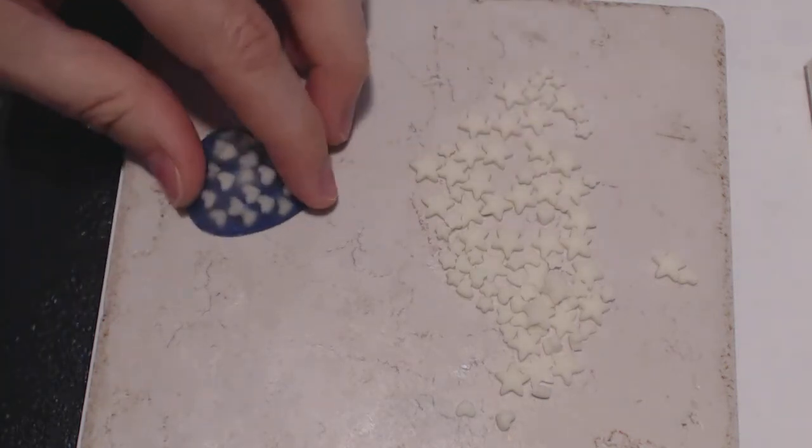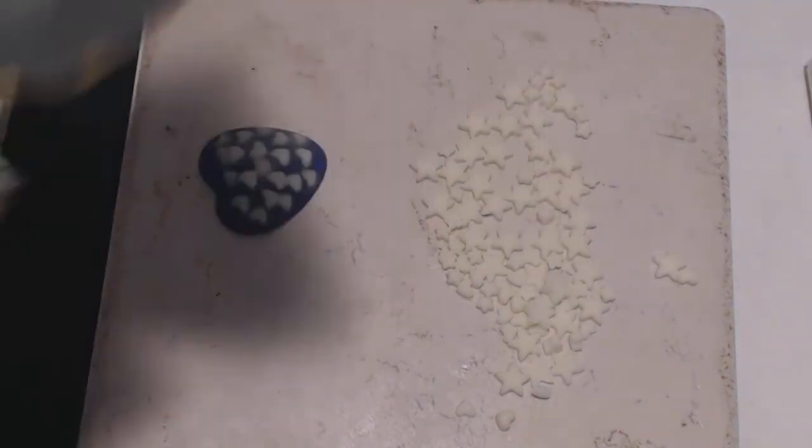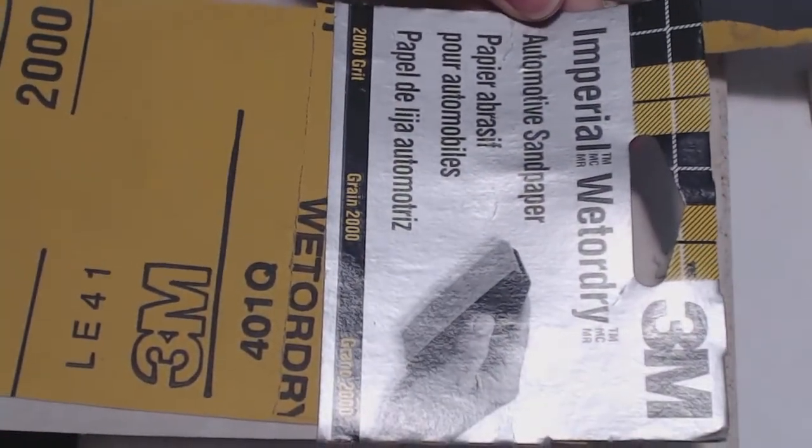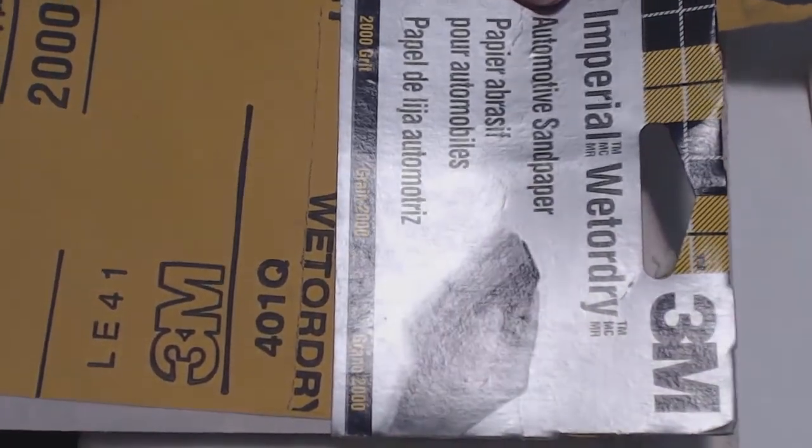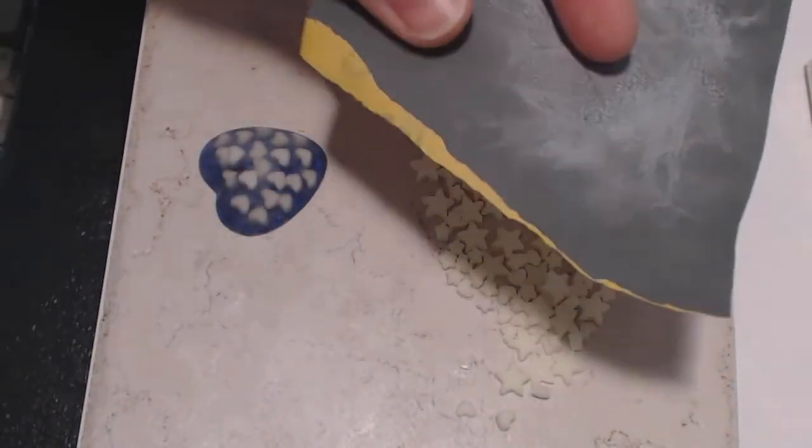This piece has already been lightly sanded. This is 3M wet-to-dry sandpaper, 2000 grit. It feels kind of soft, but that's good because you don't want to gouge out pieces of your resin or make deep scratches.